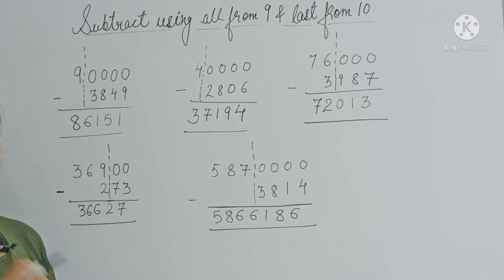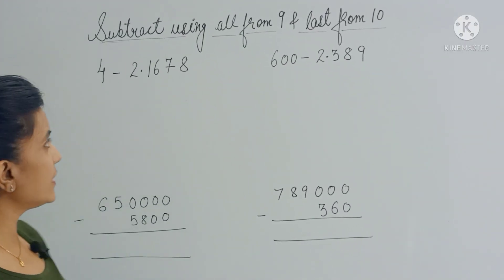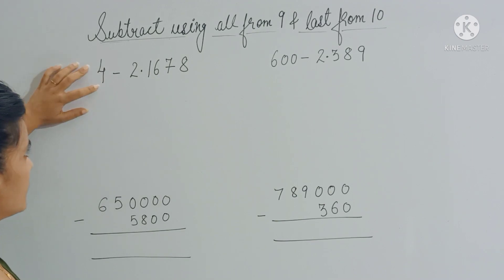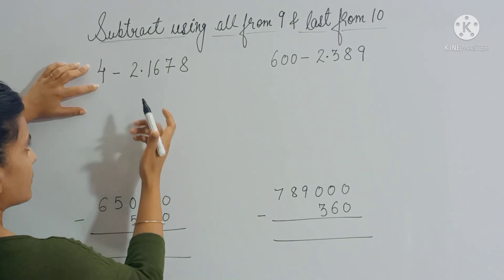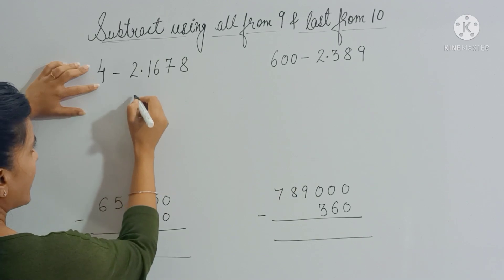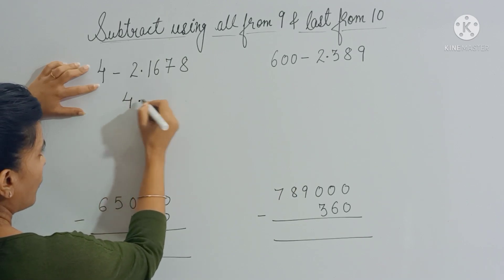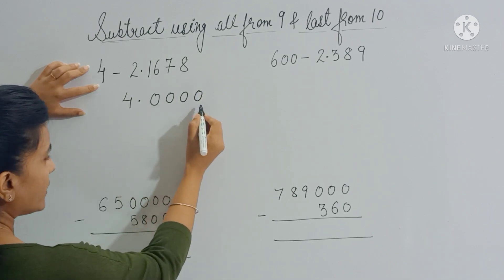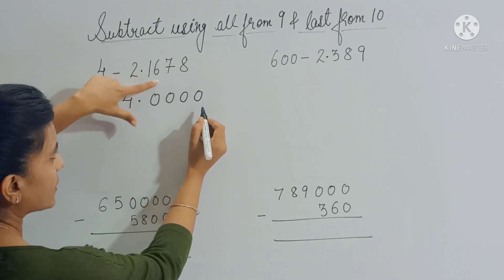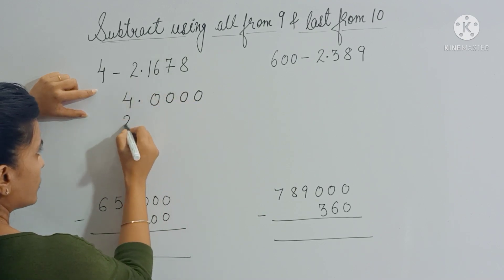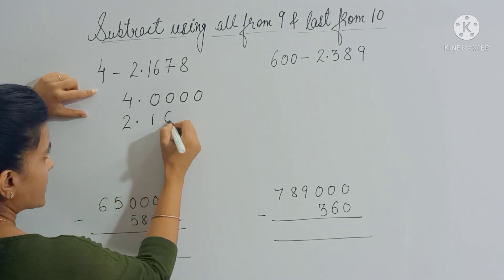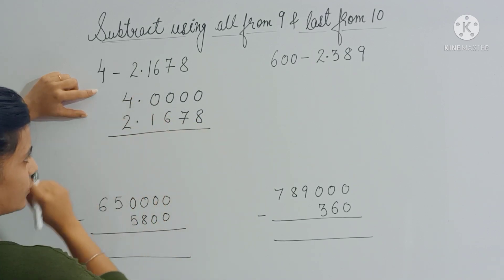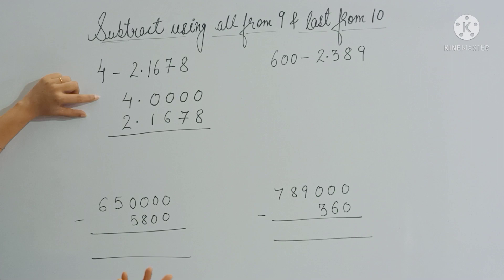Now let's do a few decimal problems. We have to subtract a decimal number from a whole number. First, arrange the numbers properly — write 4 as 4.0000 because there are 4 digits in the decimal part. Place the second number below so the decimal points align. Then subtract using the same method: separate all the zeros.